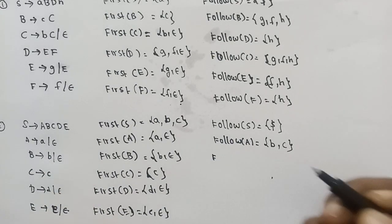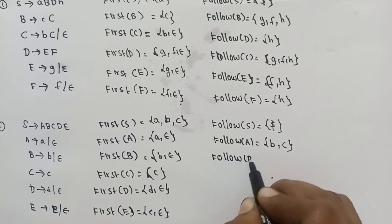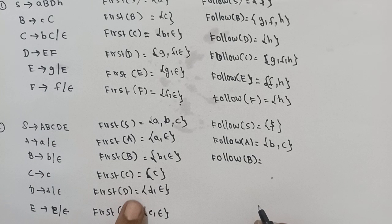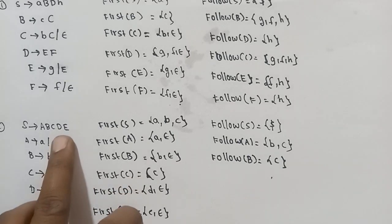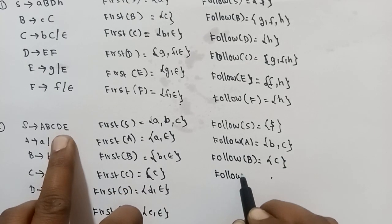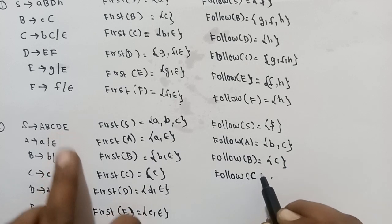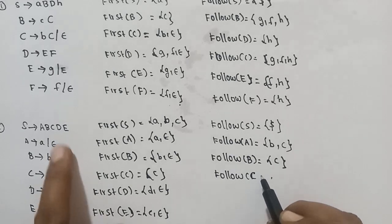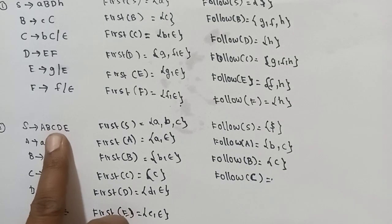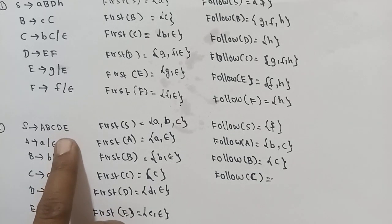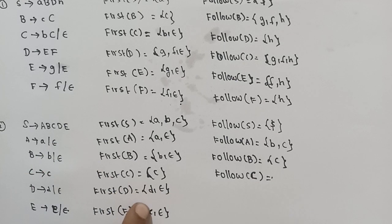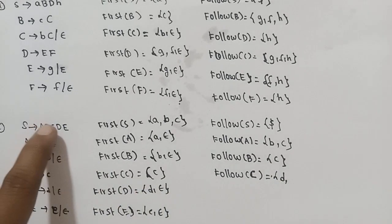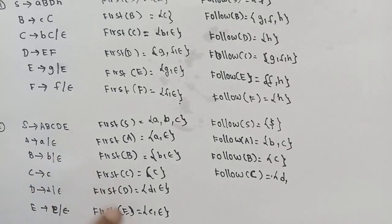Next, FOLLOW of B. FOLLOW of B equals FIRST of C, and FIRST of C equals only c, no epsilon, so no problem. Next, FOLLOW of D. FOLLOW of C — FOLLOW of C equals FIRST of D.